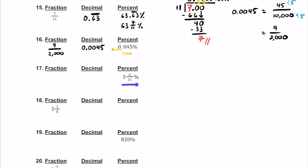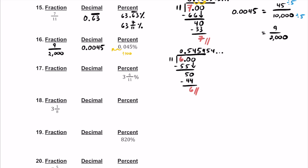For number 17, we have 3 and 6 elevenths percent — one of the trickier ones. Let's first deal with this 6 elevenths. So let's take 6 divided by 11. As we've said, all the elevenths are repeaters. It goes in 0 times into 6. Into 60, there'll be a 5 — that's 55, remainder 5. Add a 0 and bring it down. 11 times 4 is 44, remainder 6. Notice we have a 6 here and a 6 here — so this repeats. It's going to be a two-digit repeater of 5, 4, 5, 4, et cetera. So 6 elevenths is exactly equal to 0.54 repeater.